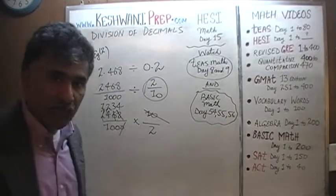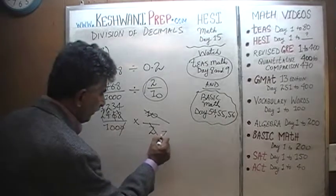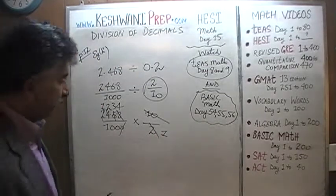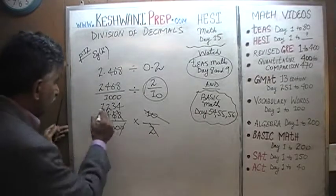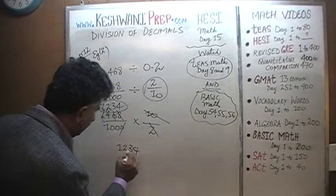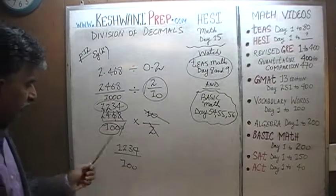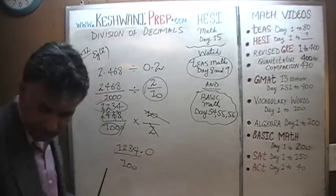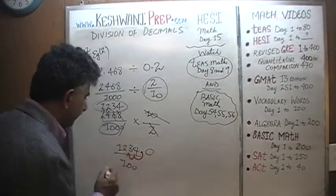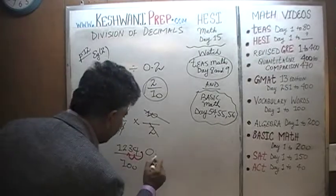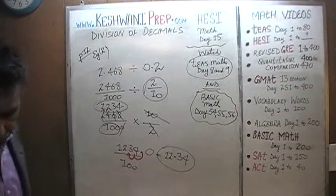We are done. It's just 1,234 divided by 100. Since we are dividing by 100, we take our decimal point — which is sitting right here at the end — and move it two spots to the left. The final answer is 12.34.